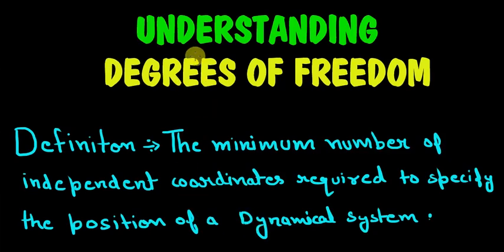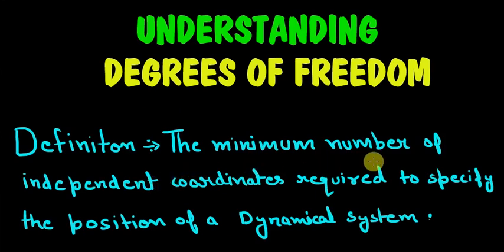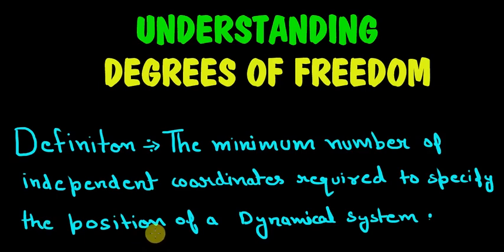This video is about understanding the degrees of freedom. The degrees of freedom are the minimum number of independent coordinates required to specify the position of a dynamical system.